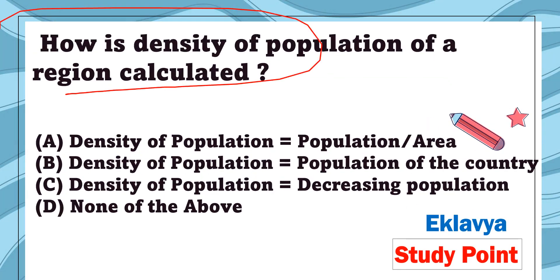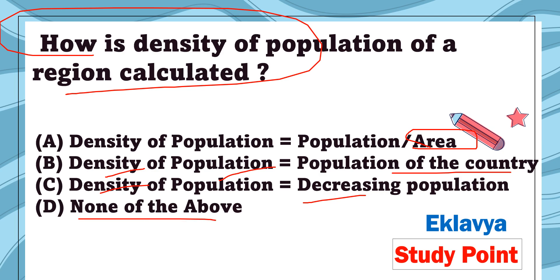Question 19: How is the density of population of a region calculated? Option A: density of population equals population divided by area. Option B: density of population equals population of the country. Option C: density of population equals decreasing population. Option D: none of the above. The correct answer is option A — population divided by area.